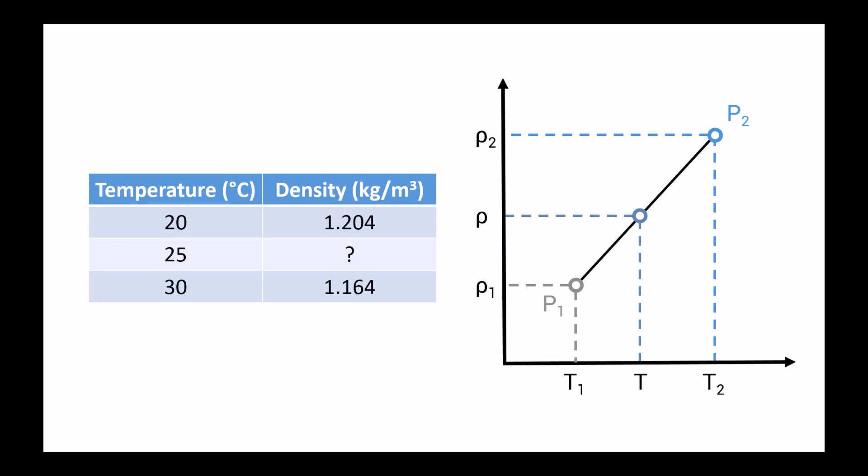Now that we know how to perform an interpolation, let's take a look at an example. What we're looking at here is a table with the density of air as a function of temperature. And we know the density of air at a temperature of 20 degrees as well as at a temperature of 30 degrees. However, we do not know the density at a temperature of 25 degrees. So we want to perform an interpolation to determine this unknown density.